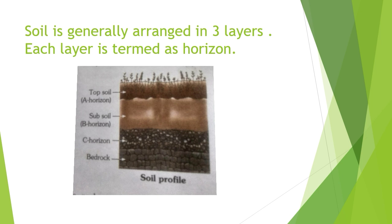The uppermost layer of the soil is called A-Horizon. It is usually dark in color and contains very fine particles of rock. It is rich in humus, which makes the soil fertile. Plants get the essential nutrients from this layer. The soil in this layer is soft, porous, and can hold more water. This layer is also known as Topsoil.